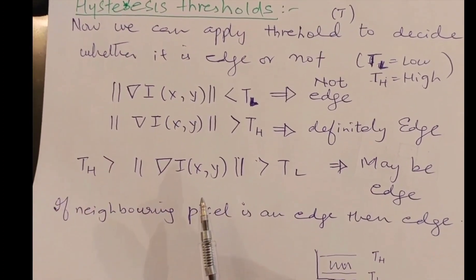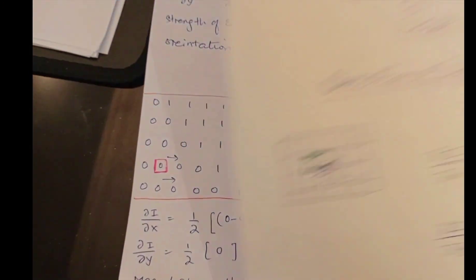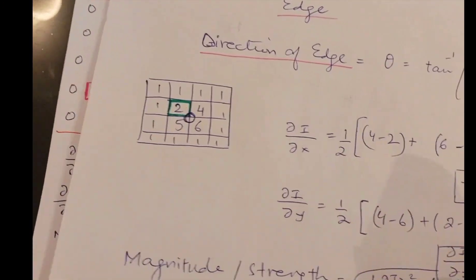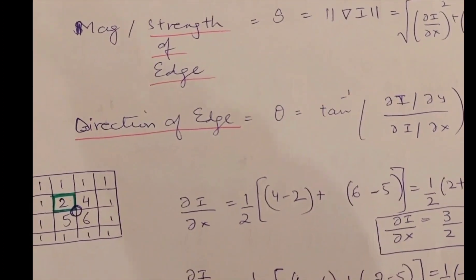So in this way, with the help of the gradients, we have actually found out whether at some particular position in the image there lies an edge or not. Thank you very much.